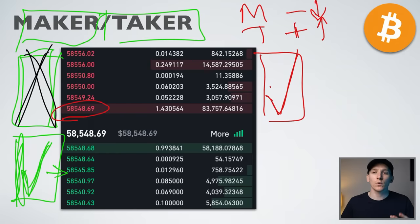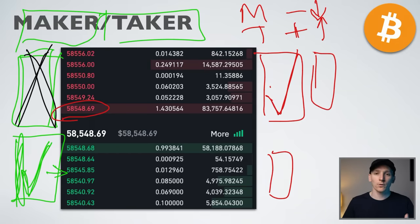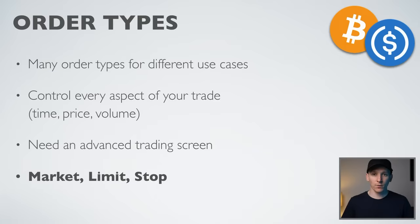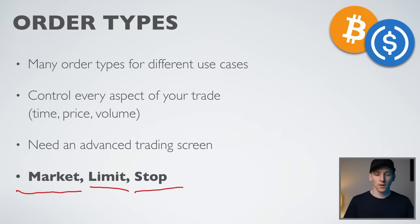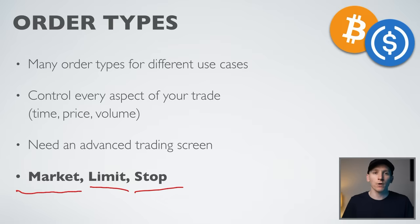When you day trade professionally, there are a few different order types you'll be using to give you full control. The three main types are: market order, limit order, and stop order. These cover pretty much 99% of what you'll be doing. Order types let you control three things: the price you trade at, the volume you trade at, and the time — how long the order stays in the system and under what conditions.